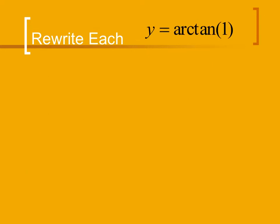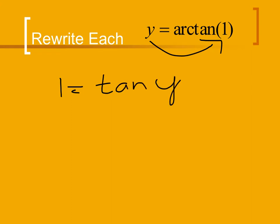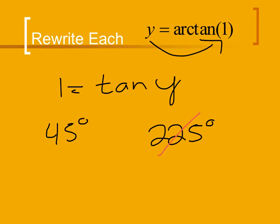Now let's try this for the arc tangent. Our first step is to switch things — switch y with the 1 — and we get that 1 is equal to the tangent of y. We examine where that happens: at 45 degrees and again at 225 degrees. The arc tangent is restricted to the first and the fourth quadrant. Since 225 is in the third quadrant, we reject that. 45 is in the first quadrant, so we accept that as our answer.